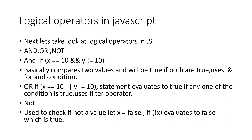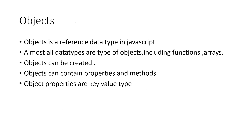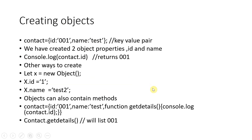Now let's look at objects. Objects are a reference data type — an important one. Almost all data types in JavaScript are objects, including functions. Objects can be created and they contain properties and methods. Object properties are key-value type.